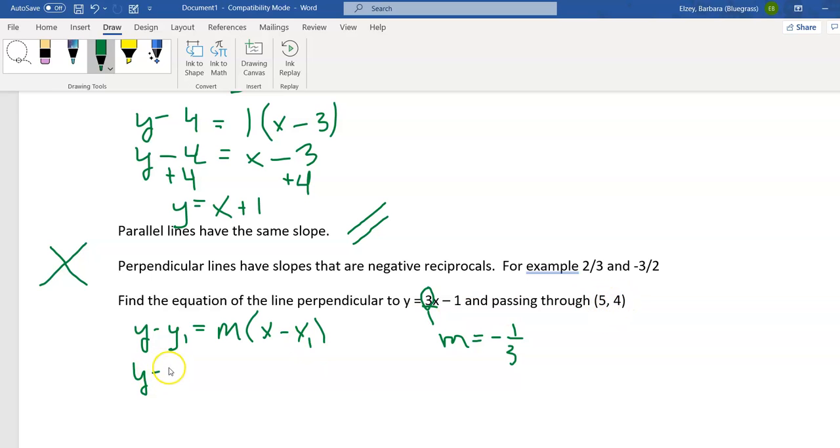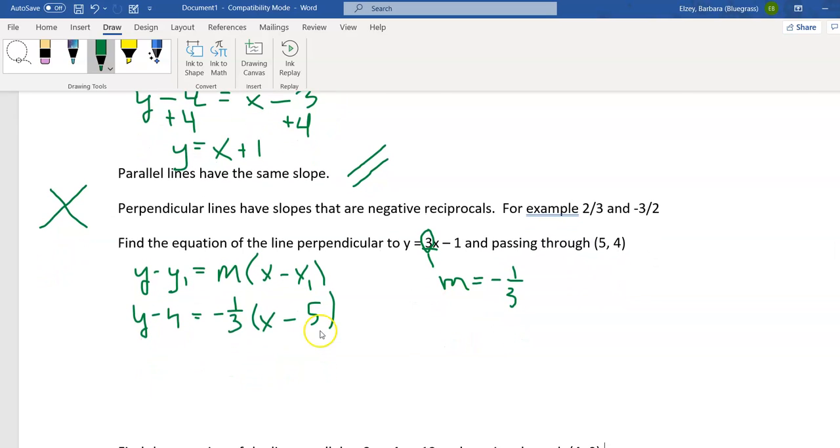So y minus 4, m is negative 1 third, x minus 5. Now fractions are usually the things that people kind of forget how to work with. Let's think of our 5 as being over 1, and I'm going to multiply the negative 1 third through the parentheses. So negative 1 third times x is negative 1 third x, and then we want to multiply negative times negative, so 1 times 5, 3 times 1, so 5 thirds.